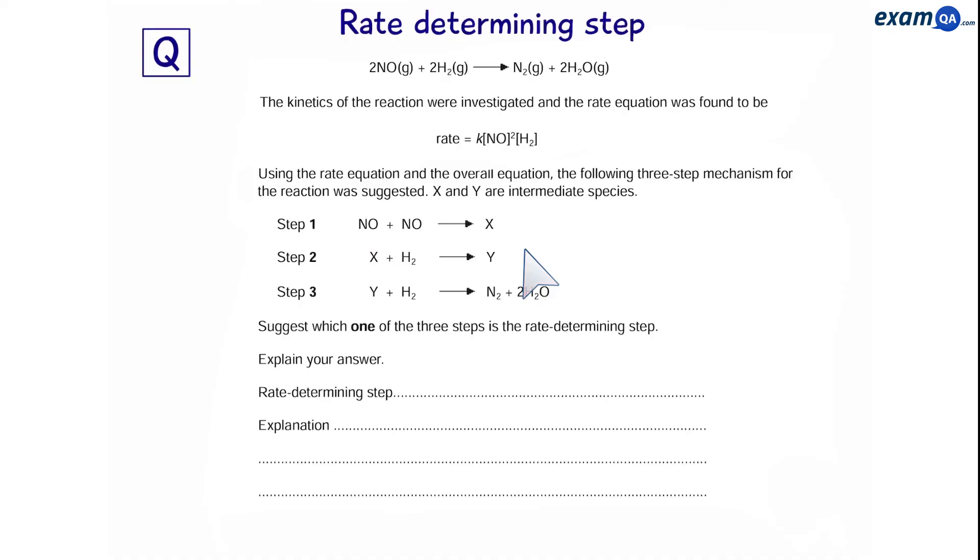However, we can see that from step 1, x is equal to two nitrogen monoxides. So, in step 2, we have two nitrogen monoxides and a hydrogen. Which means step 2 must be the rate determining step. As for the explanation, we can say that the species in step 2 are in equal proportion to the rate equation.